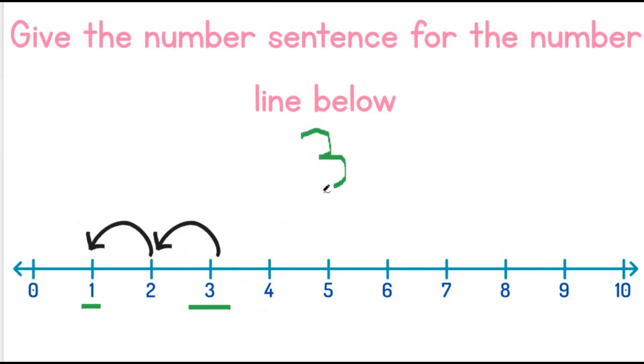We have 3 and we have 1. We go back 2 spaces. So 3 minus 2 equals 1. That is our number sentence. Let's try this again.